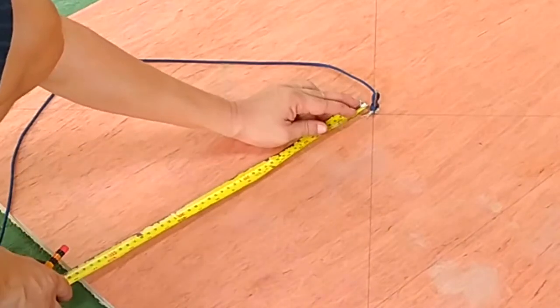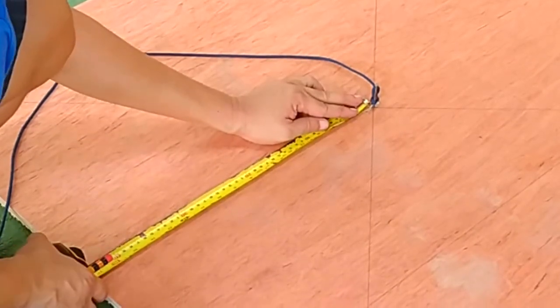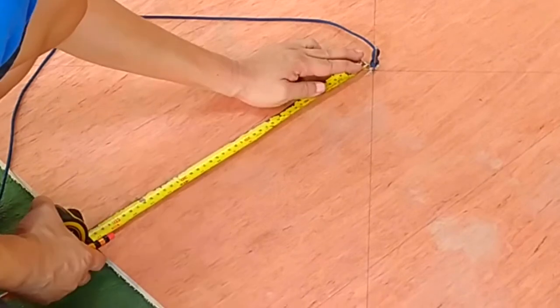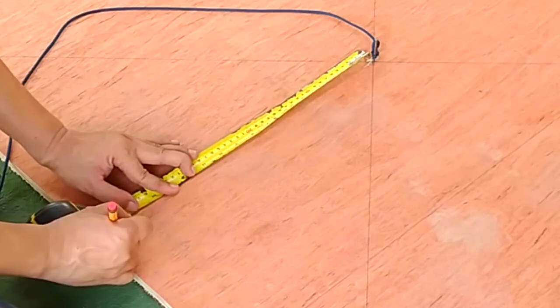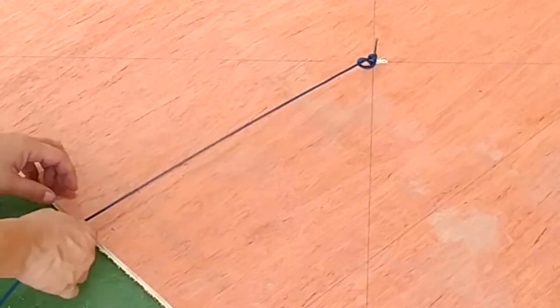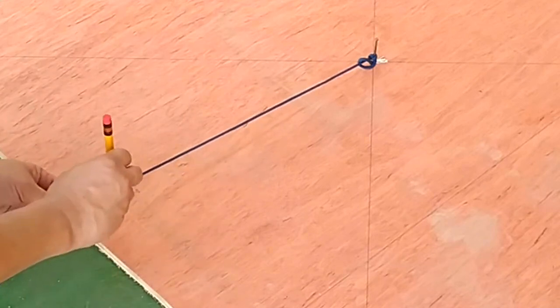From the center, I measure and mark the radius of our circle. Radius is any straight line extending from the center of a circle to its circumference. In other words, the radius of a circle is half its diameter. So, if the diameter is 34 inches, then the radius of our circle is 17 inches.